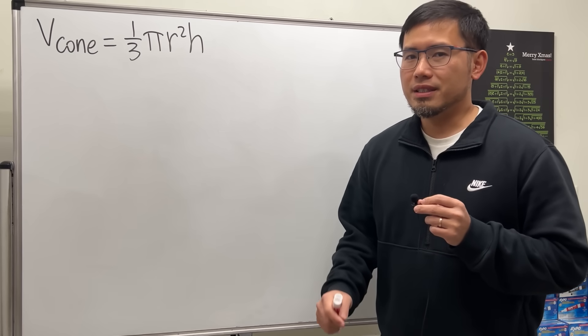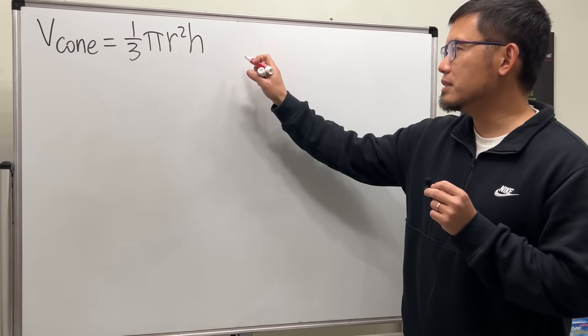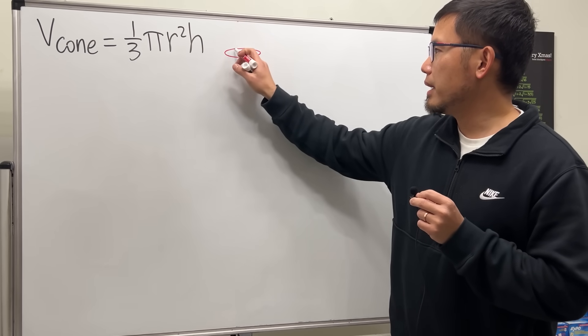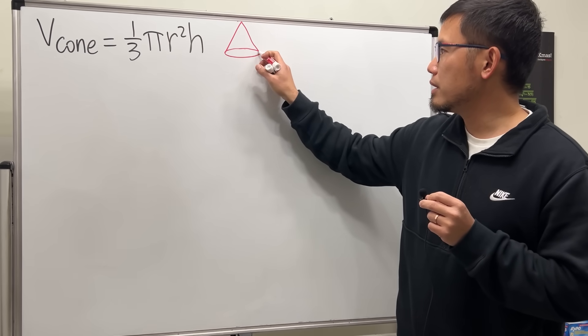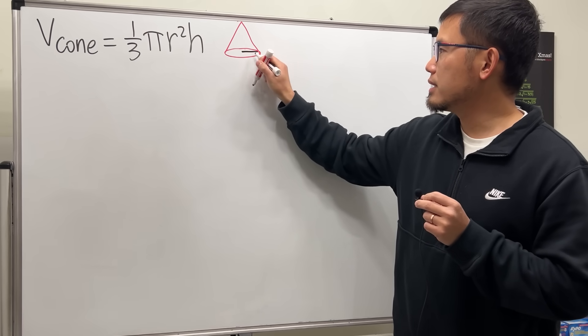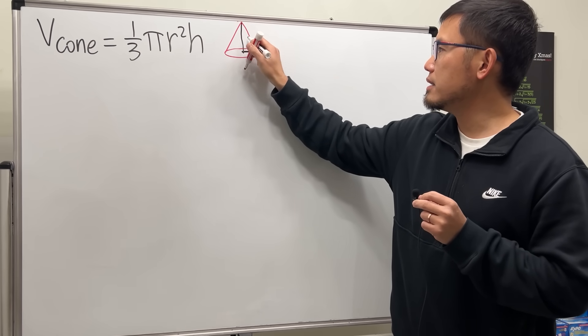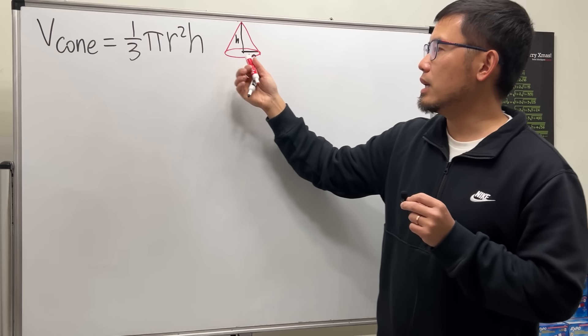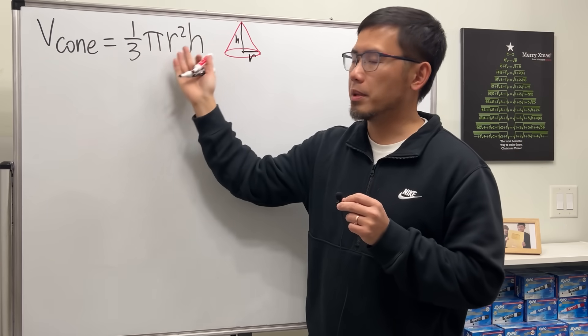Here we go. First, let me just show you guys a picture for a cone. This is how we like to draw it, right? Circular base and then the height. Right here, let's say the radius is r and the height is h. So that will have the volume one third pi r squared h.